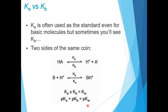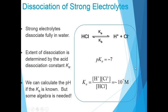Consider the dissociation of a strong electrolyte like HCl. HCl dissociates into H⁺ and Cl⁻, and the pKa of this dissociation is −7, so Ka equals 10⁷ molar. Ka equals the concentration of H⁺ times the concentration of Cl⁻ divided by the concentration of HCl.